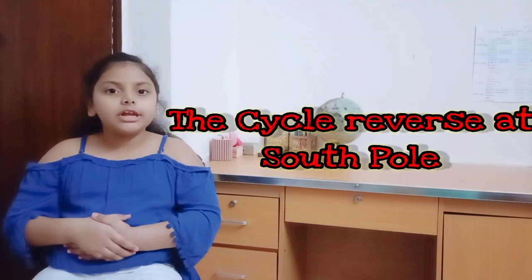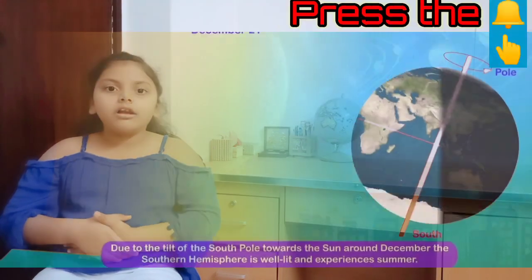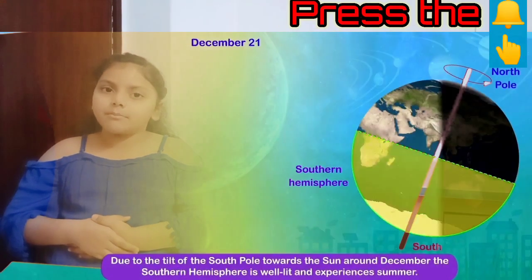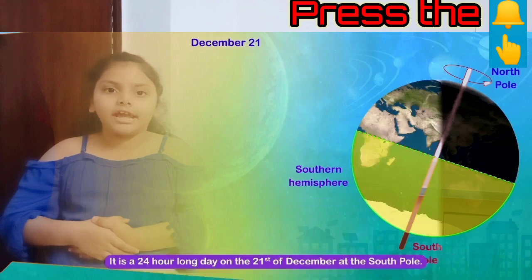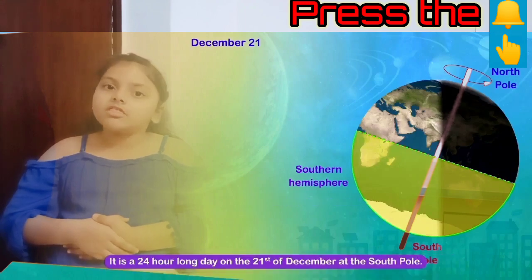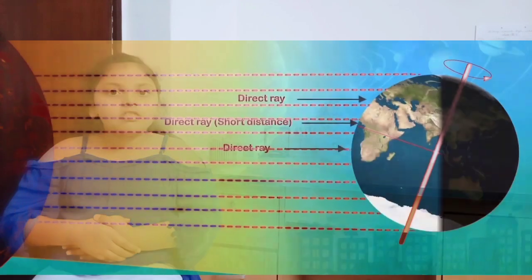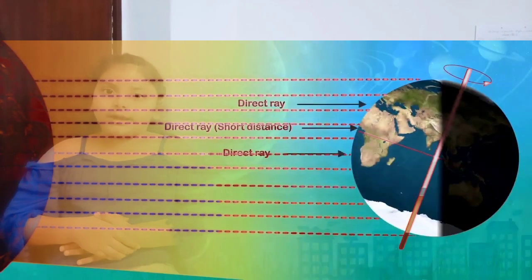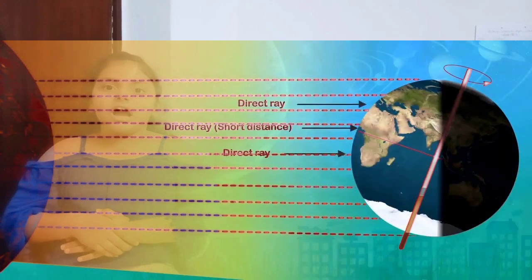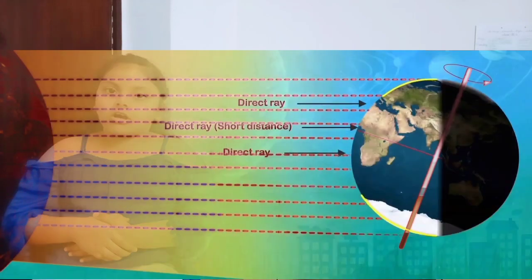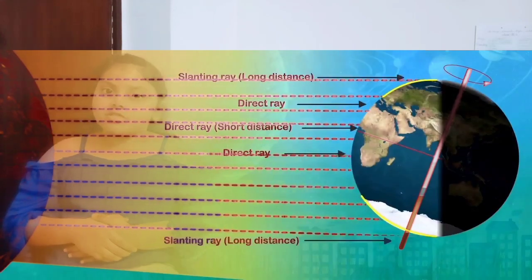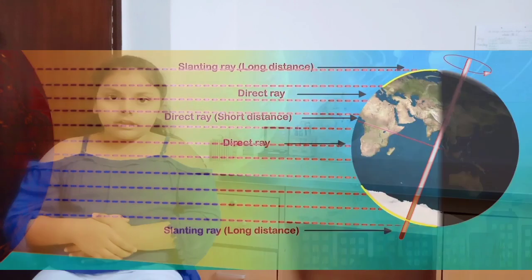The cycle reverses at the south pole. Due to the tilt of the south pole towards the sun, the southern hemisphere is well lit and experiences summer. It is a 24-hour long day on the 21st of December on the south pole. The sun rays fall directly at the equator, thus heating up the areas of that part of the earth, while the poles, which are curved areas, receive slanting rays from the sun.